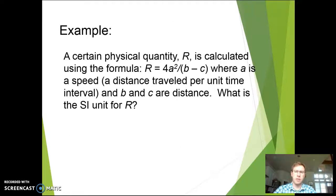All right, so let's try another example. This one I want you to give it a go on your own, so you're going to need to pause it after I introduce it. All right, so here's a physical quantity. Let's call it R. It's calculated using the equation R equals 4A squared over B minus C, where A is speed, B and C are distances. In that case, what is the units for R? Pause it and try it out. Be sure you try it. All right, hopefully you paused it. Hopefully you got an answer for R. Let's check this out.